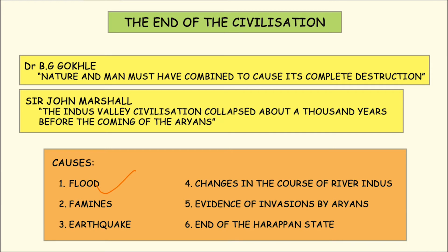Some scholars believe that the rainfall received by the Harappan people began to decline in the second millennium BC, around 2000 BC. Because of this decrease in rainfall, the region became drier and drier, leading to the drying up of the Ghaggar-Hakra river. This was disastrous because water is the source of livelihood for agriculture, animals, and people. When rivers dried up and rainfall declined, it compelled the people to migrate elsewhere.